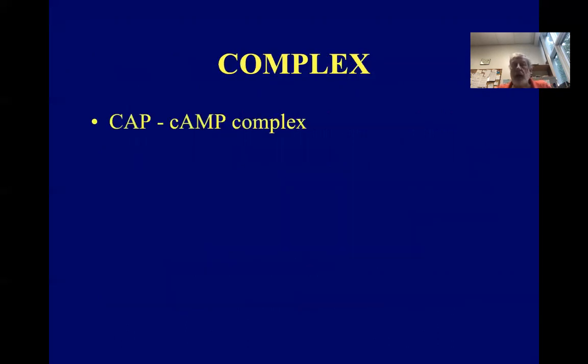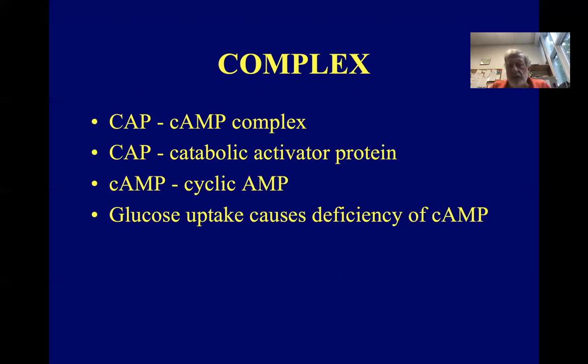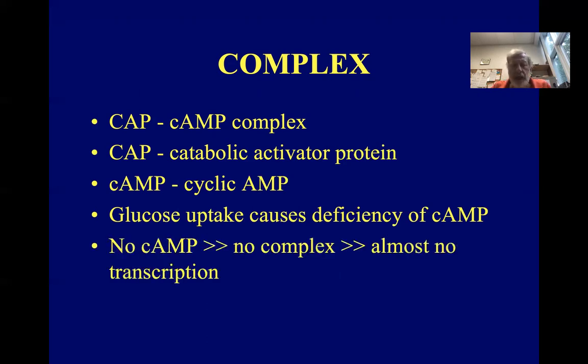So this complex is the CAP-cAMP complex. CAP stands for catabolic activator protein, and cAMP is cyclic AMP. And so glucose uptake in the cell causes a deficiency of cyclic AMP. And therefore there's no complex and therefore transcription is almost turned off.